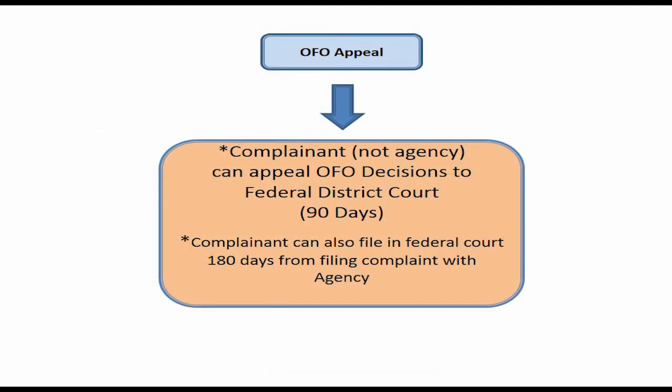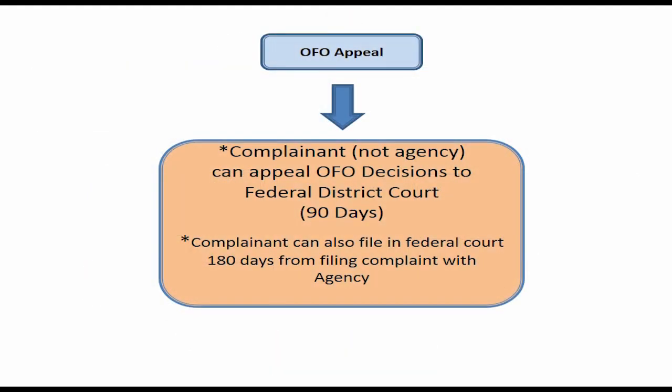After OFO makes its decision on the appeal by either you or the agency, you have 90 days from the date you received the decision to take the matter to federal district court. If you choose, you also have the right to opt out of the federal process after 180 days from the filing of your formal complaint, or 180 days from the date of your appeal with EEOC. If you do choose to go to federal court, your complaint will start all over from the beginning.